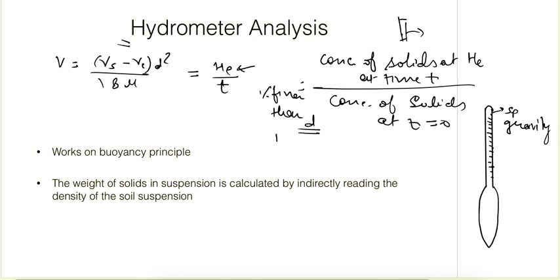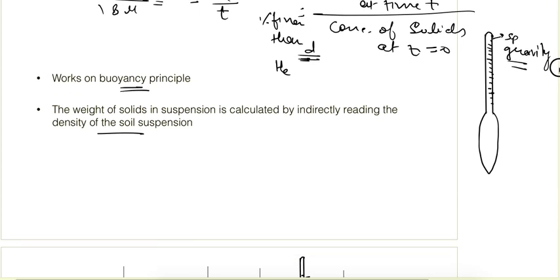The diameter d at height He is calculated using the Stokes law formula. The hydrometer is a device which works on the buoyancy principle, and the weight of solids in suspension is calculated by indirectly reading the density of the soil suspension. The hydrometer is calibrated in such a way that it indirectly gives us the specific gravity, and using that we find out the weight of solids in suspension.